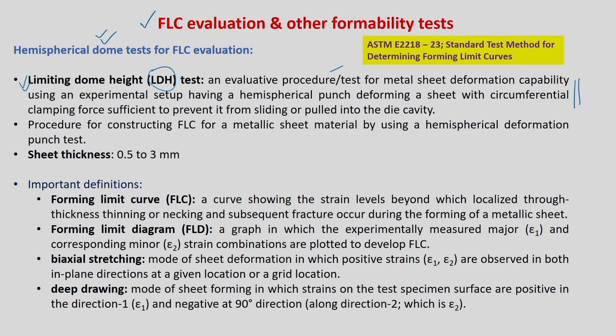One important issue here is the sheet generally should not slide inside. The sheet has to actually stretch below the punch. That is the main thing — with the circumferential clamping force or blank holding force sufficient to prevent the sheet from sliding or being pulled into the die cavity. It should not draw in; it has to be clamped tightly. This is the procedure for constructing the forming limit curve of a metallic sheet using a hemispherical deforming punch.